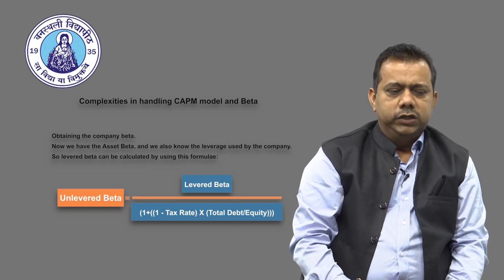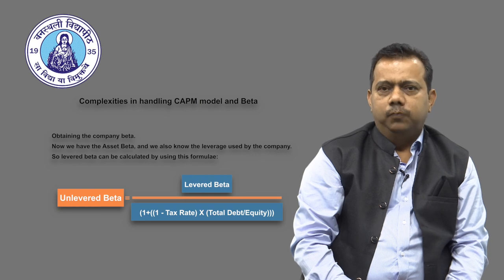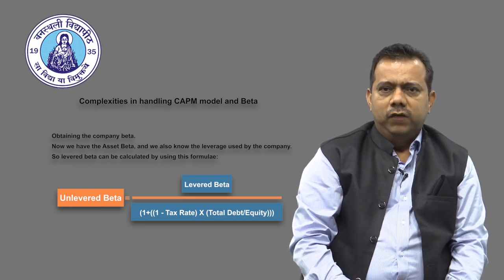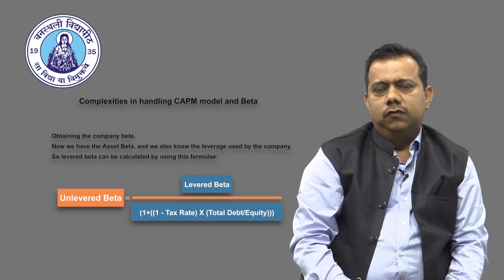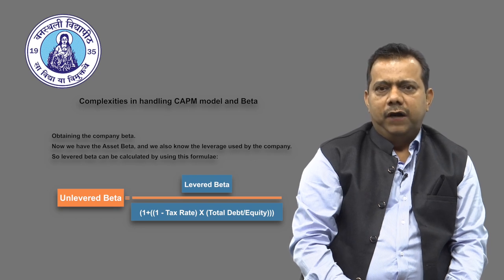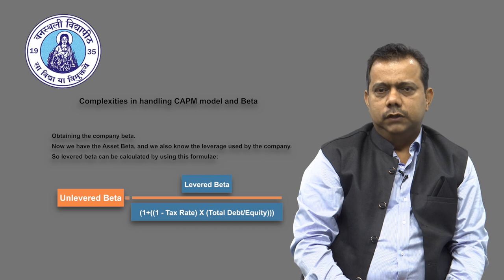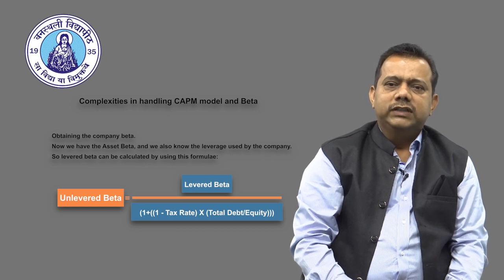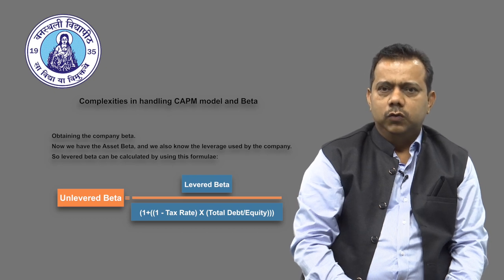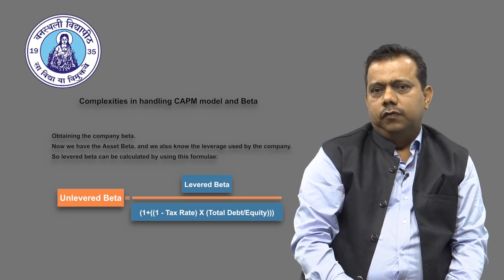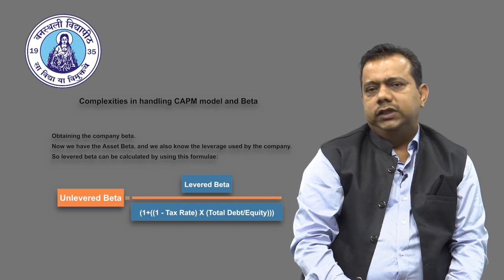Once we obtain the unlevered betas of all competing companies, these are called industry betas or asset betas. We can use this asset beta as a proxy for valuing a new startup company that does not have a beta because it has no trading history.